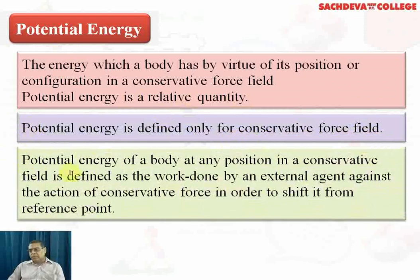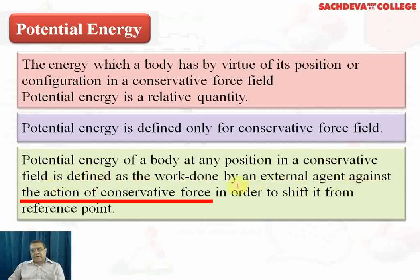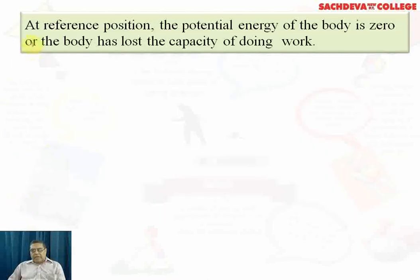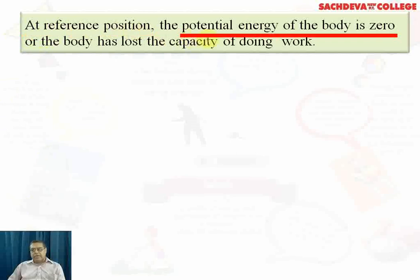Potential energy of a body at any position in a conservative field is defined as the work done by an external agent against the action of the conservative force in order to shift the body from the reference point. At the reference position, the potential energy of the body is zero — the body has lost its capacity for doing work.